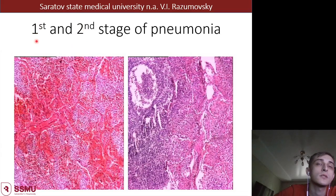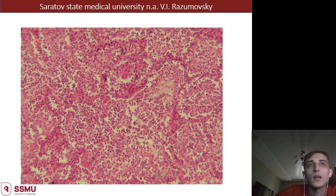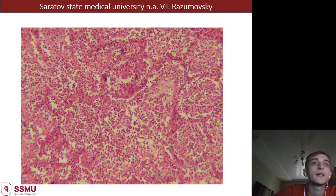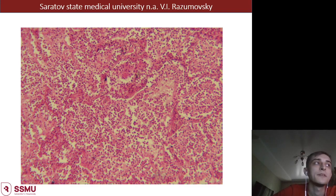On this slide we can see the stage of grey hepatization or grey liver-like induration. We can see accumulation of neutrophils and fibrin in the lumen of alveoli.